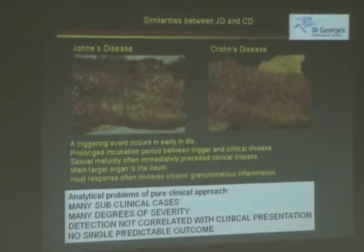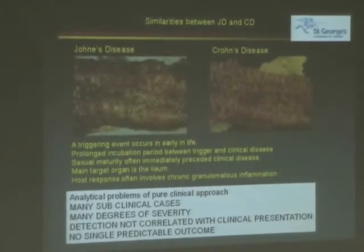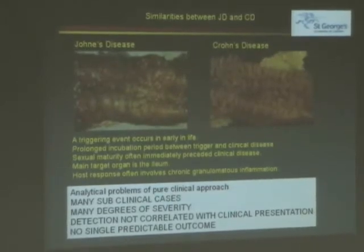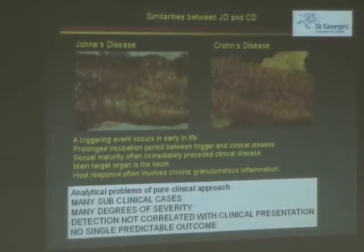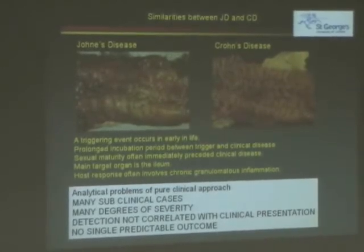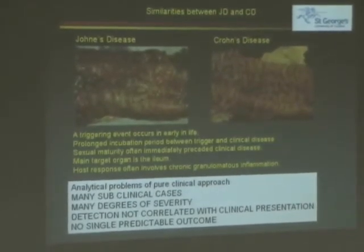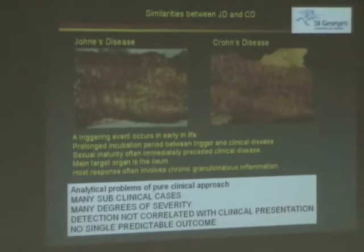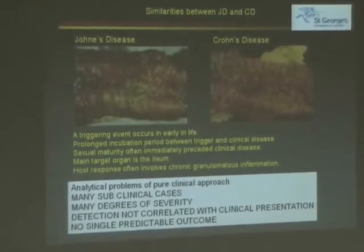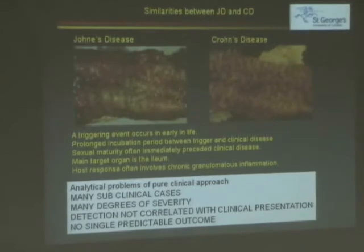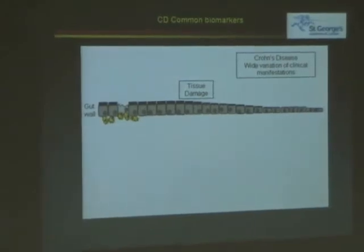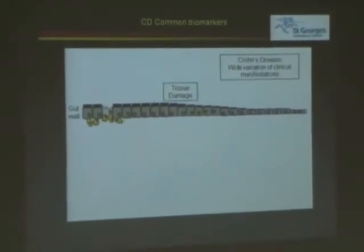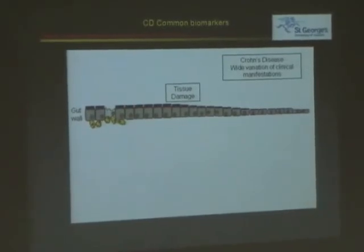To start with, there are many subclinical cases, and certainly in Johne's disease, and we'll see that this probably occurs also in Crohn's disease as well. There are many degrees of severity that we can have with the disease, and therefore detection isn't necessarily correlated with clinical presentation. So what you end up with is no real single predictable outcome, making it very difficult to find a common biomarker — and it's this common biomarker we want to find for Crohn's disease.